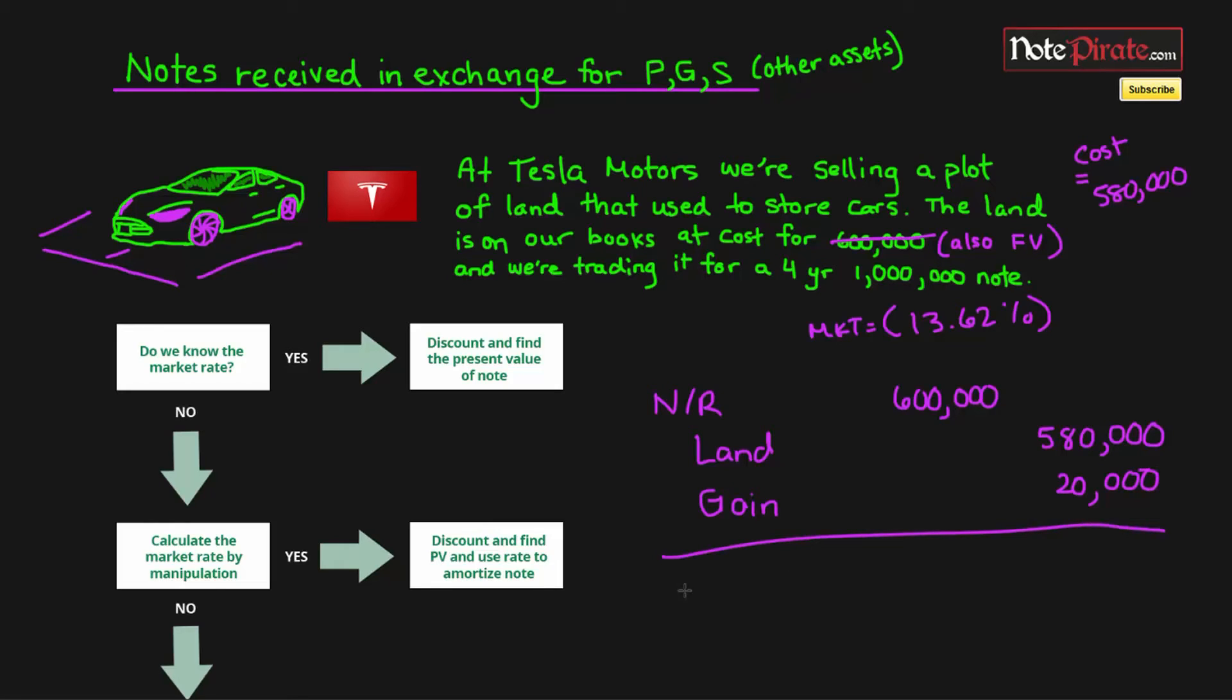You can also do it using the contra asset accounts. It would look like this with $1,000,000 as the gross amount. The discount is going to be $400,000. Land is going to be de-recognized at its cost, and then the gain, which is $20,000. That was just the first row on the flowchart.